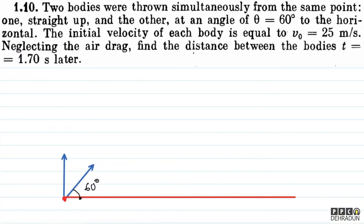So what does the question basically want to say? Two bodies are thrown from the same point — one goes straight up and one is thrown at an angle of 60 degrees to the horizontal. Both have the same initial velocity of 25 meters per second. Neglecting air drag, find the distance between them 1.7 seconds later.